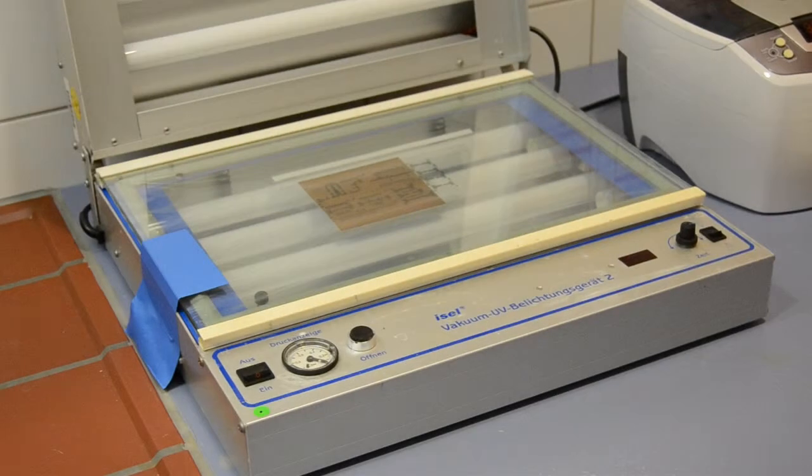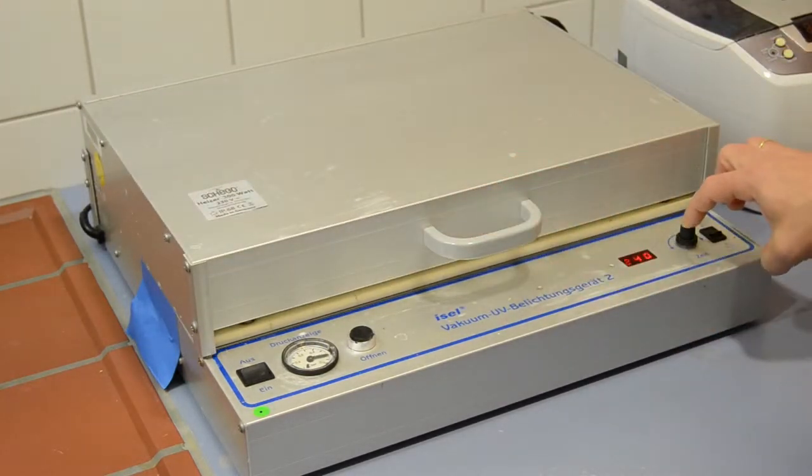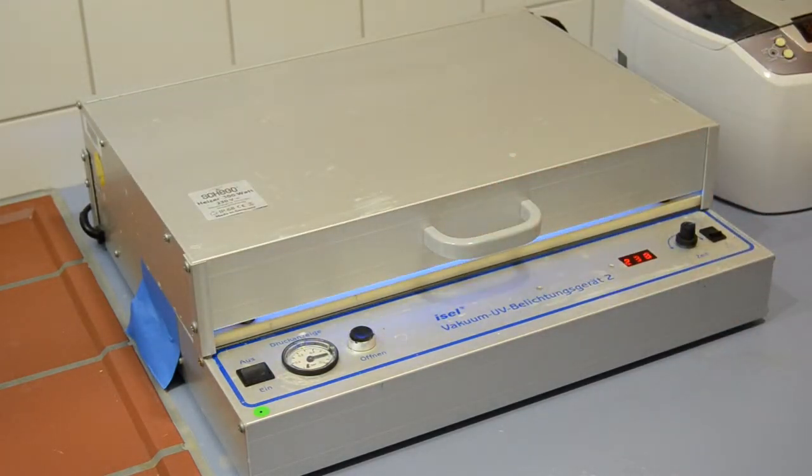The mask is placed onto the circuit board inside the exposure machine. First we create a vacuum to remove any extra air bubbles between the substrate and the mask. We close the lid and start the exposure using UV light.